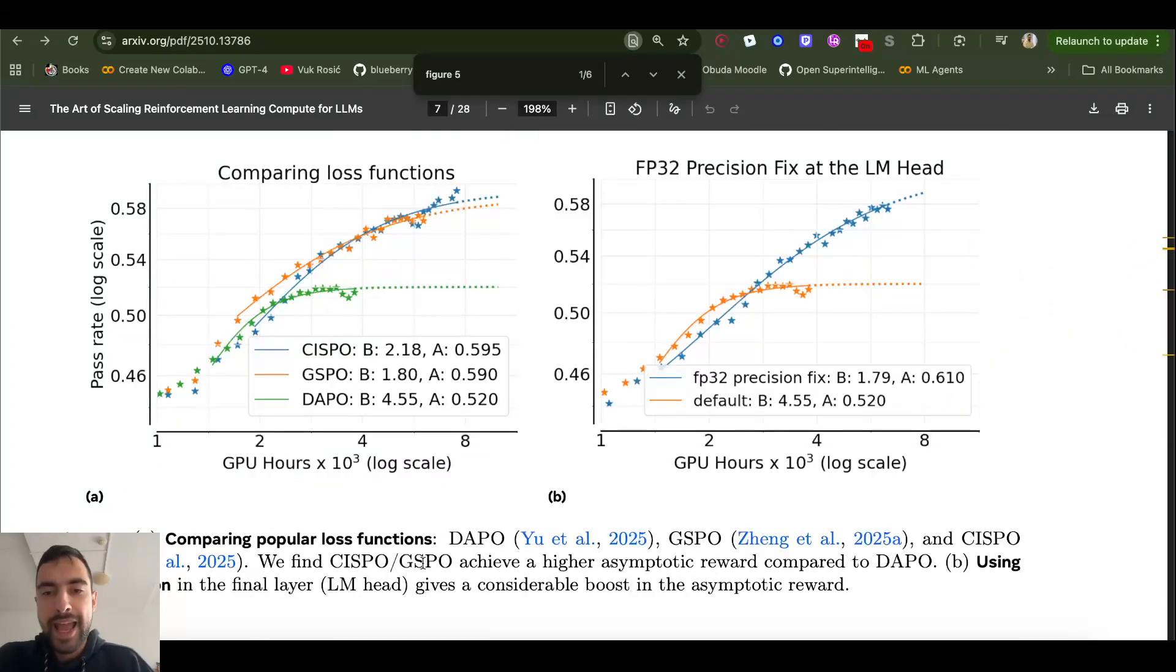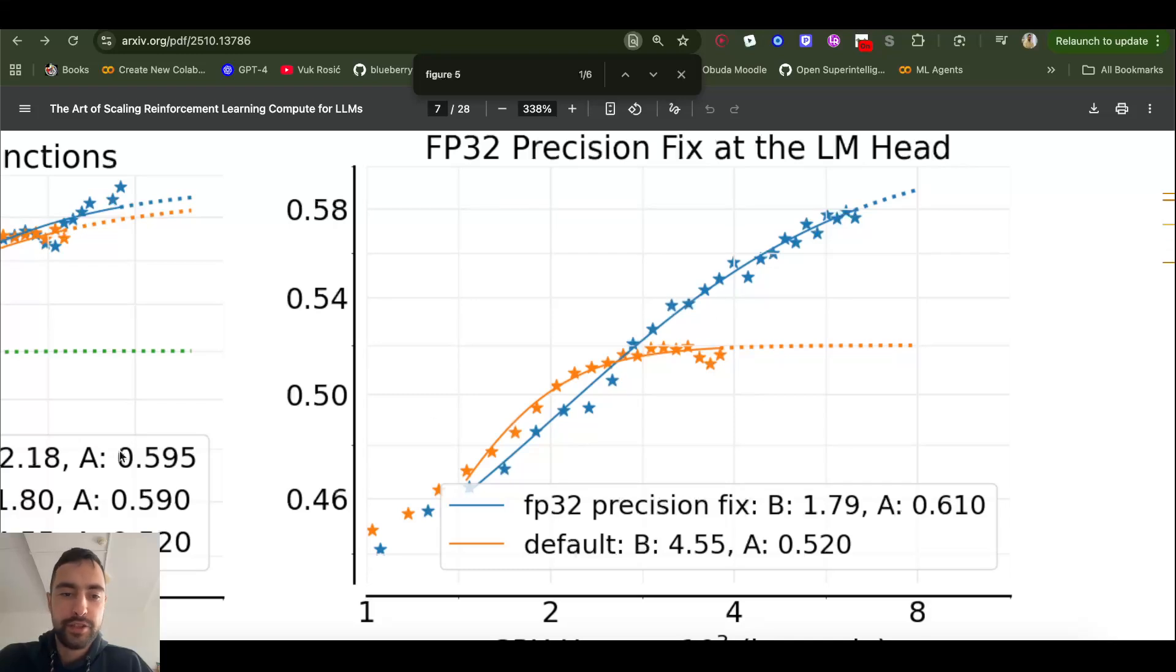And then also using FP32 precision in the final layer, which is LMHead, which is the layer that generates the next token. It improves the ceiling a lot here. You see, the scale is still the same. So FP32 precision is still going up. And you see B and A. So slope and maximum ceiling reward are increased. And I presume it's a bit slower to learn here because it's still in FP32, so there is more compute necessary. And this LMHead at the end can be huge. It's very big. So this can have significant impact on slowing down a little bit in the beginning here. But eventually, because of the 32-bit precision, then it's going to surpass.